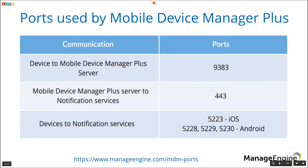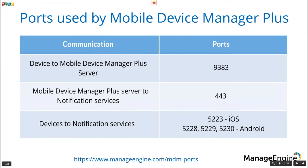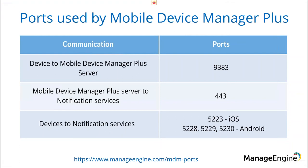These are the ports used by our MDM on-premise solution. For devices to MDM server communication, it uses port 9383 (HTTPS). For server to notification service, it uses port 443. Devices to notification service use a separate list of ports. You can visit the below-mentioned URL to know the inbound and outbound ports and protocols used for MDM communication.